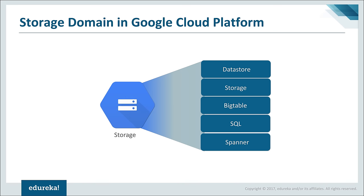The next domain is storage. In the storage domain, there are a host of things you can store. The first service is called the Datastore service — a NoSQL service in which you can store unstructured data. Whenever your application wants a storage location for unstructured data, you can store it in Datastore. Both Datastore and Bigtable are used for NoSQL or unstructured data, but Bigtable is used specifically with Hadoop or big data applications — it can be integrated with HBase.